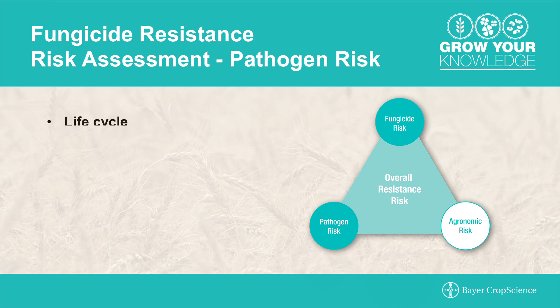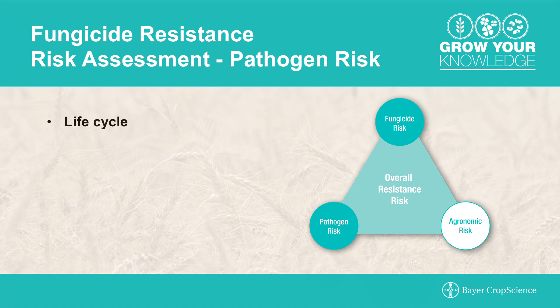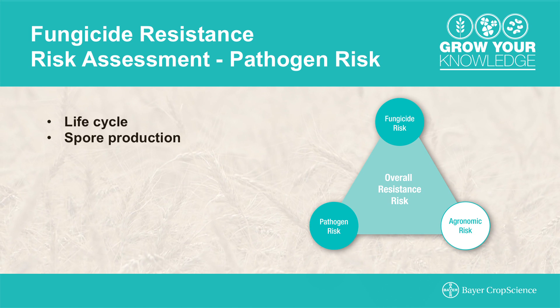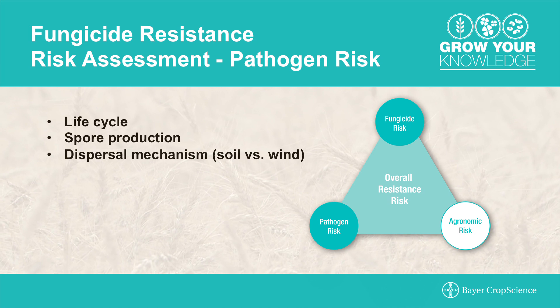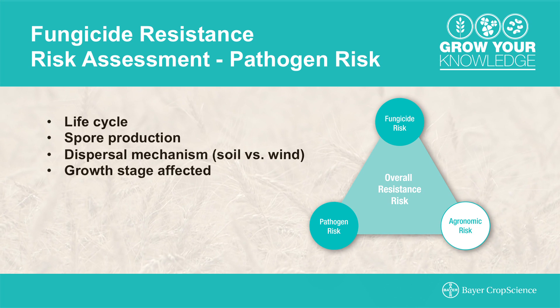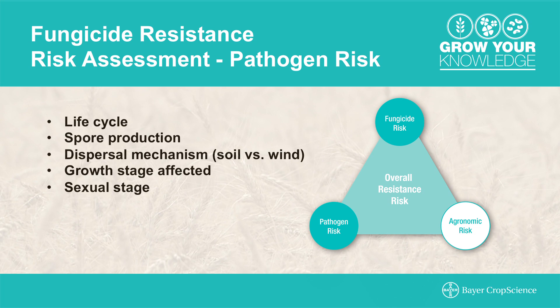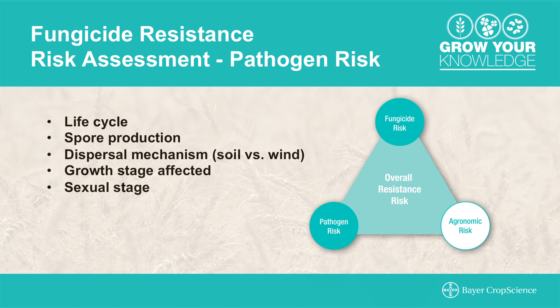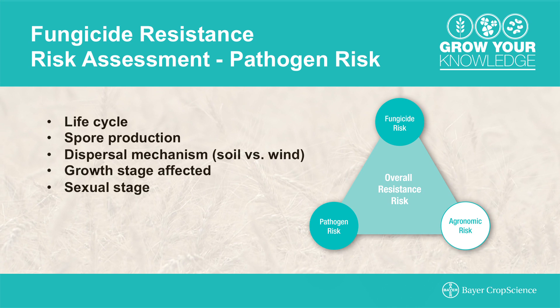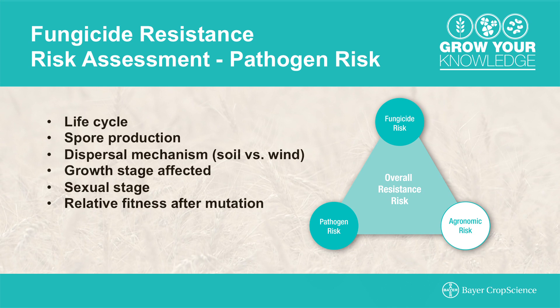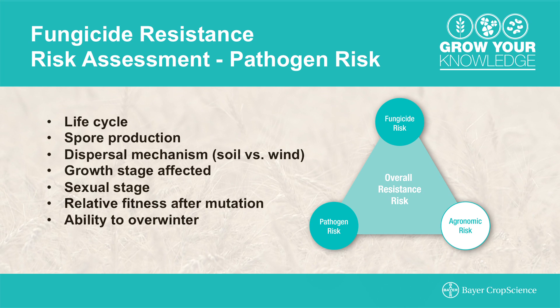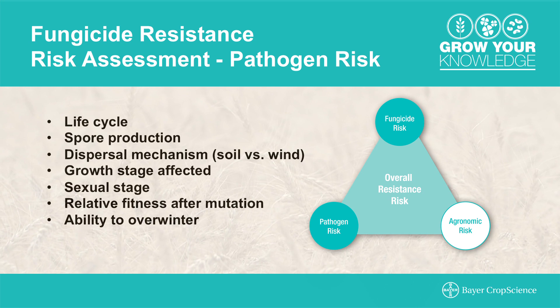When evaluating the potential for a pathogen to become resistant to a fungicide, scientists look at seven key factors: Does the pathogen have a short life cycle or multiple disease cycles per year — is it monocyclic versus polycyclic? Does it produce a lot of spores? How does it spread — through wind dispersal or through the soil? Does it infect all growth stages? Does it reproduce sexually, allowing genetics to spread further — or, if the resistance is recessive, can masking occur during sexual reproduction? What is the pathogen's relative fitness after a mutation? And lastly, does it overwinter in Canada? Certain pathogens such as rust don't overwinter here, so are not really a concern.